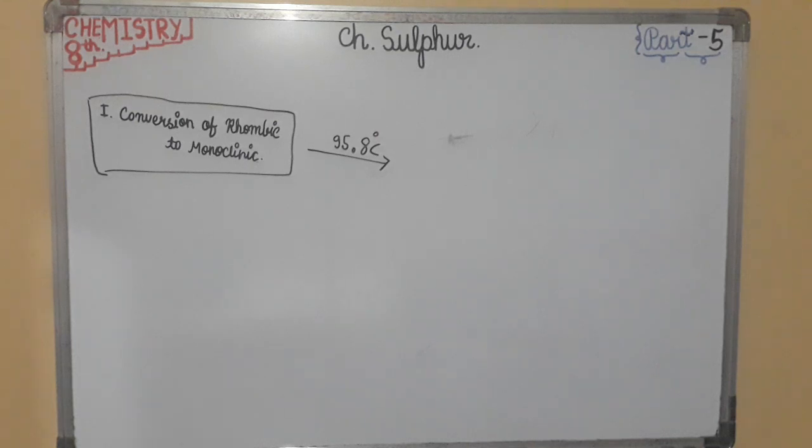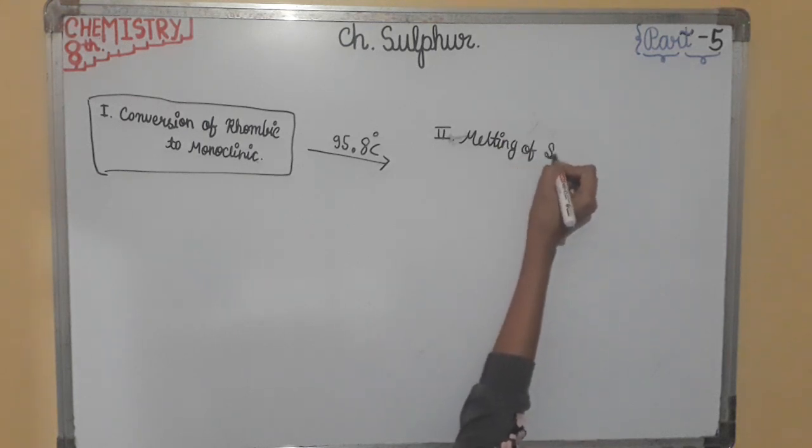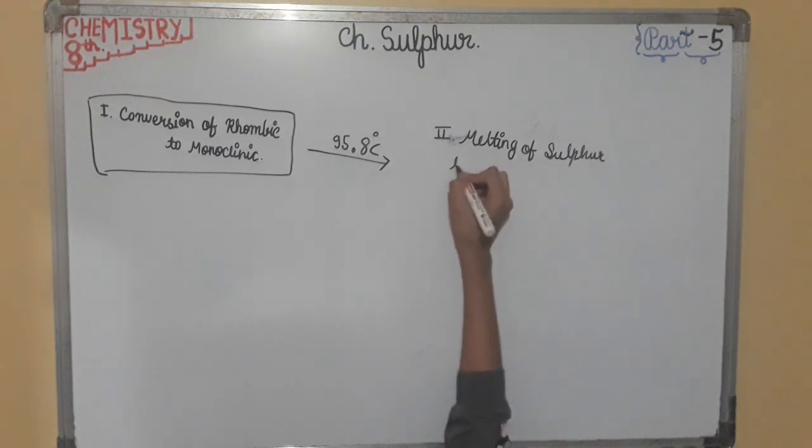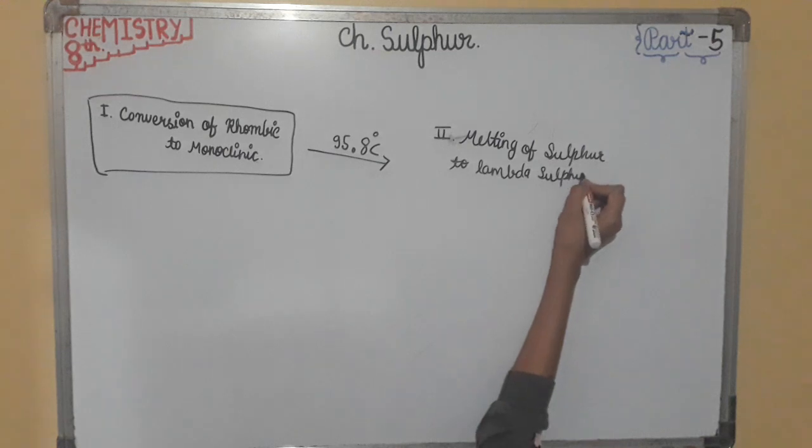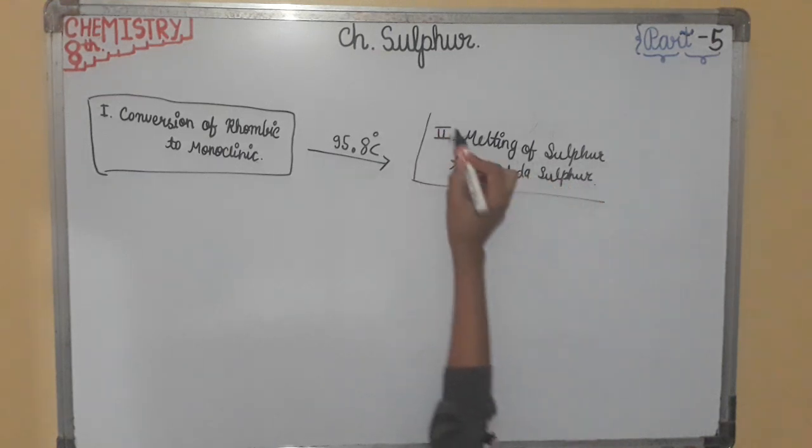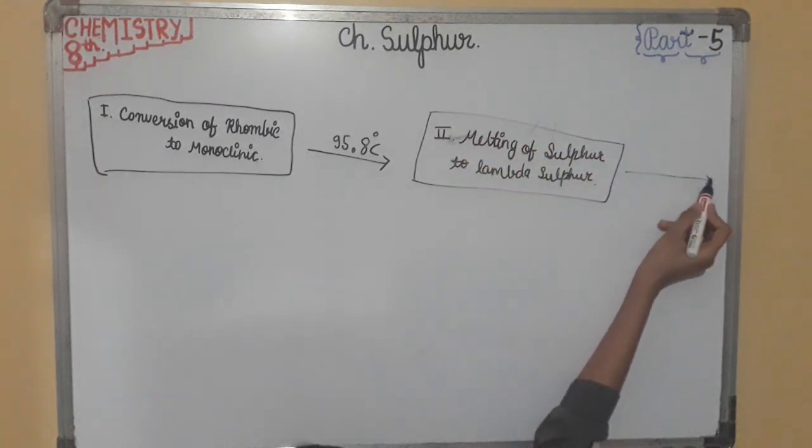Second, it is melting of Sulphur to Lambda Sulphur with temperature of 114 degree Celsius. The Monoclinic Sulphur melts to Lambda Sulphur at 114 degree Celsius. In Lambda Sulphur, S8 molecule exists as spherical rings.